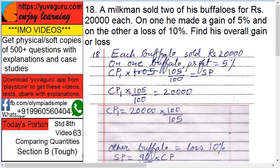Cost price multiplied by 105 — what is 105? It's 100 plus 5. 100 is the basic price and 5 is the profit. So that's why 105, which is 100 plus 5 upon 100. You have to add the profit percentage into the cost price: 100 plus 5 percent upon 100, into CP1, equals 20,000. So CP1 equals 20,000 multiplied by 100 upon 105.